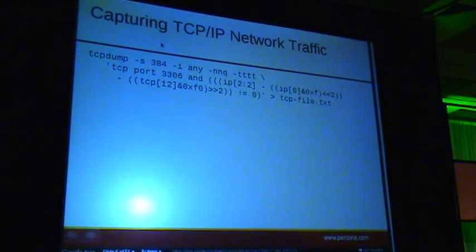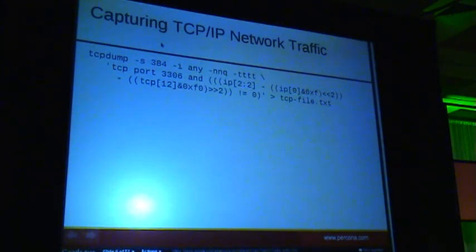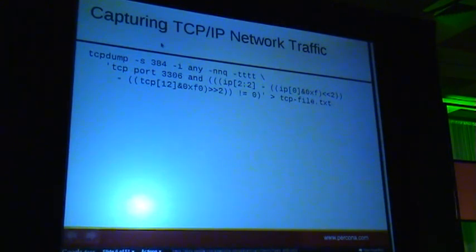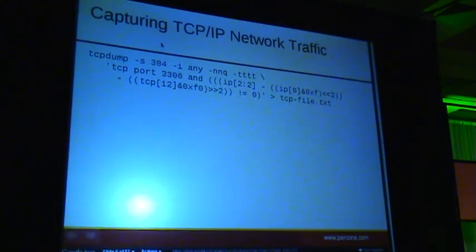Here is your tcpdump command to capture these packet headers from the system. Dash s384 is the snap size — the amount of data we're going to capture from each packet. 384 bytes is the packet headers, as I mentioned. Dash i any means listen on any interface. Dash NNQ means don't resolve host names — you specify that flag twice — and then Q for quiet to suppress some of the noise. The four T's are timestamp formatting; if you give dash T four times you'll get a timestamp formatted down to the microsecond.